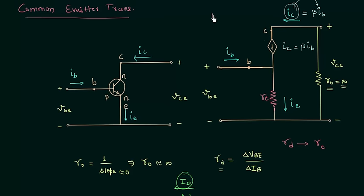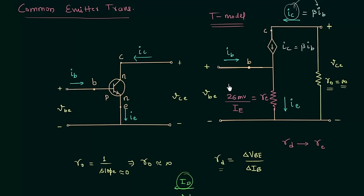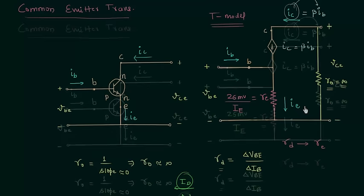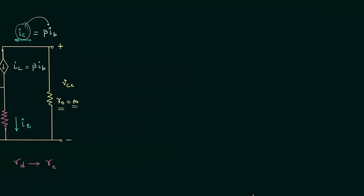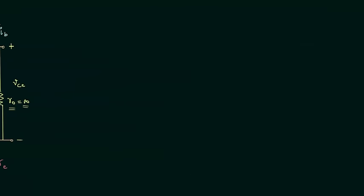This model is also called the T model. In this model R_E = 26 mV / I_E. In the next lecture we will perform a few simplifications — we will try to separate the input and output sides of the circuit and also discuss the output resistance. We will then move on to find the RE model for the common base configuration.